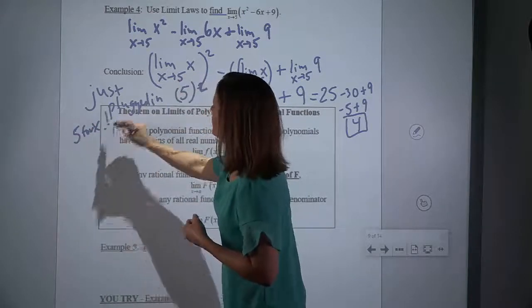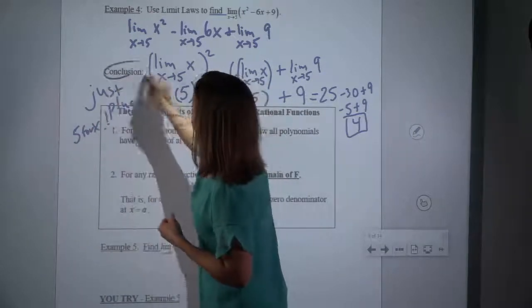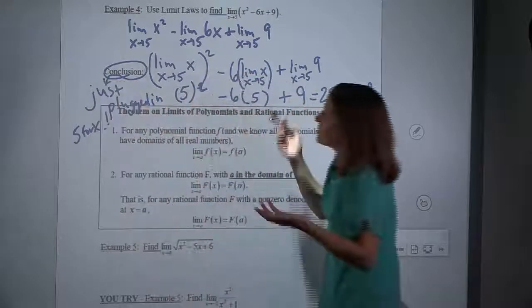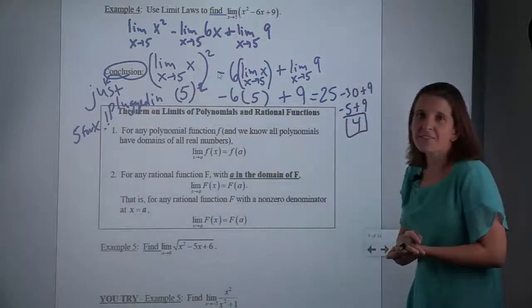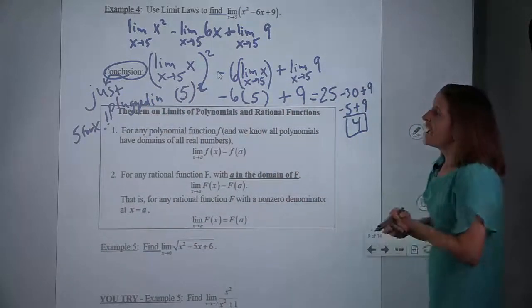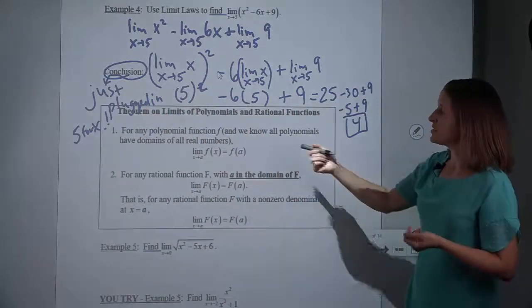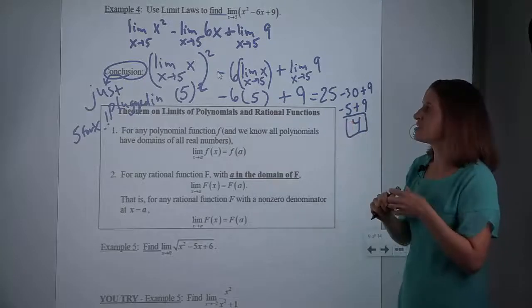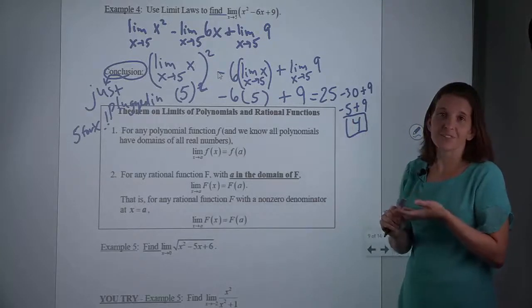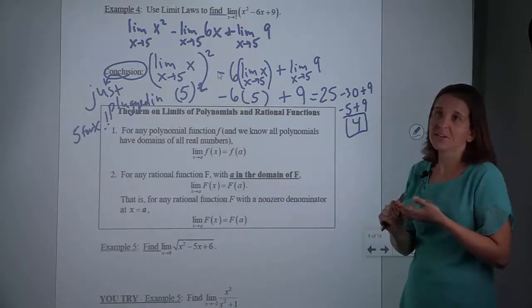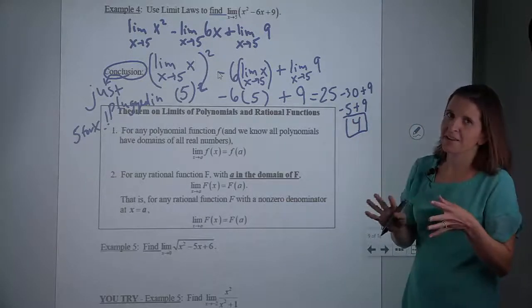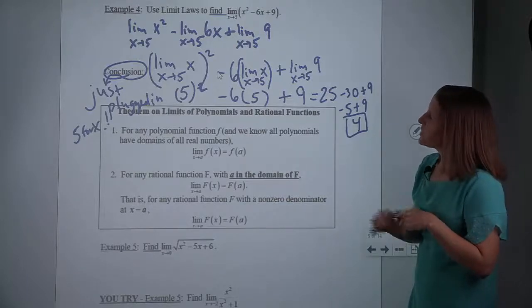So we used all the limit laws, but in the last step it ended up looking like we just plugged in 5 for x. So that's our conclusion — it looks like all we did was plug in 5 for x. It turns out that for nice functions, that is actually all we're doing, and we can do that. But then what about not nice functions? We have to see in a minute.